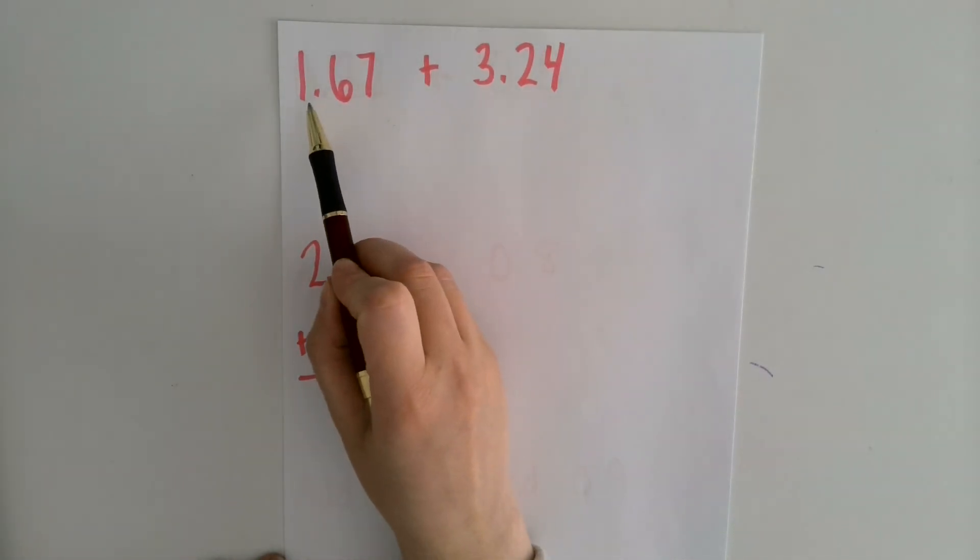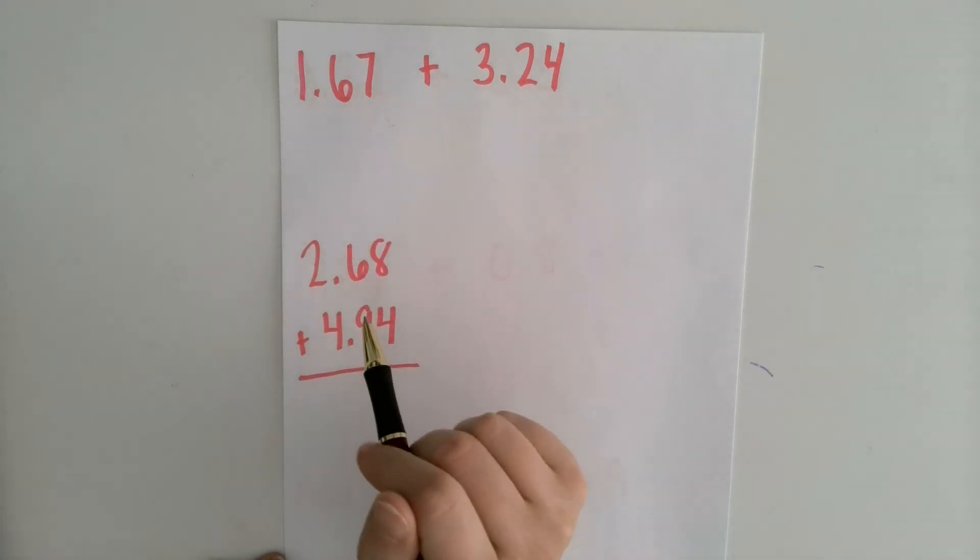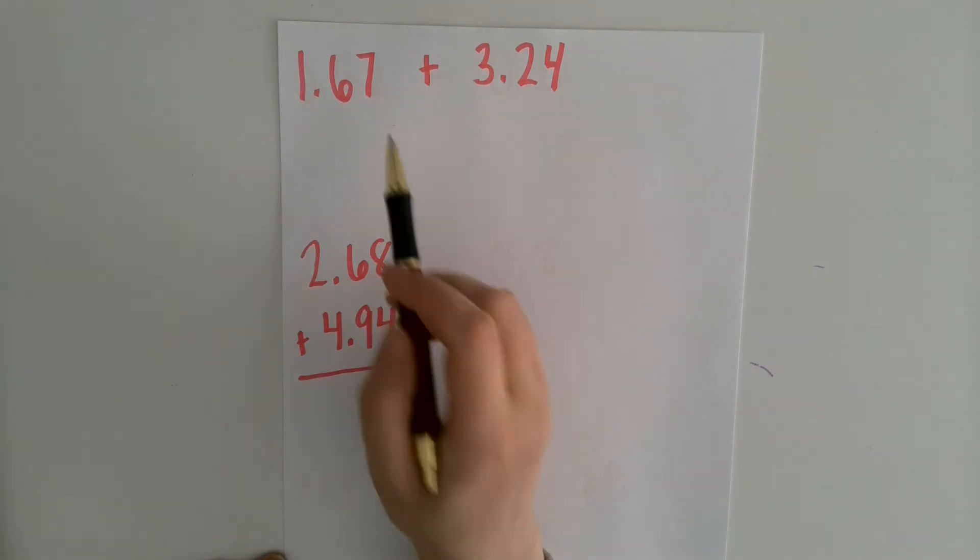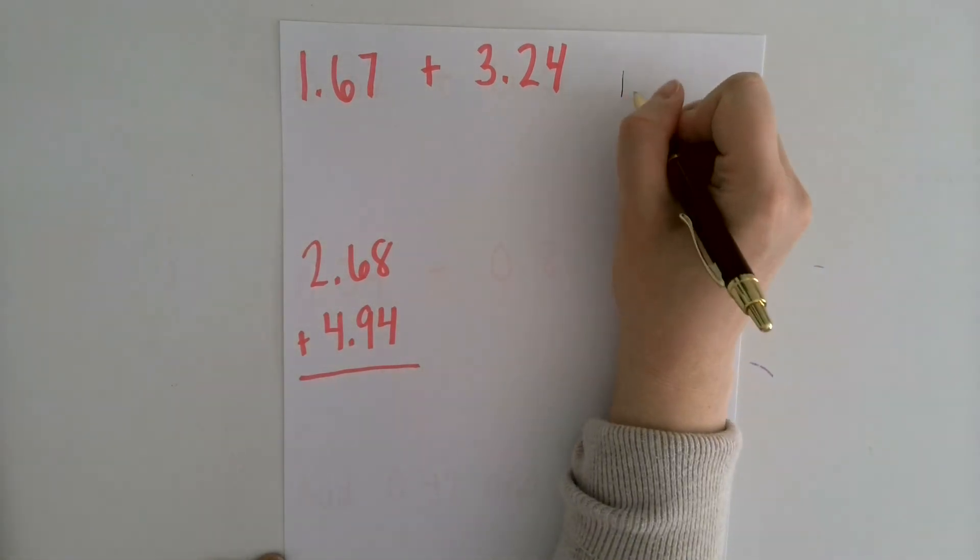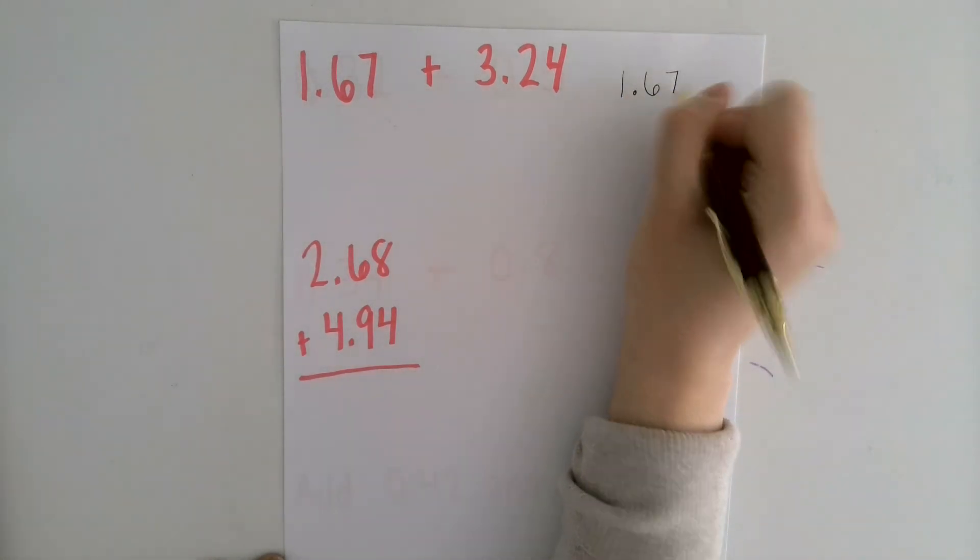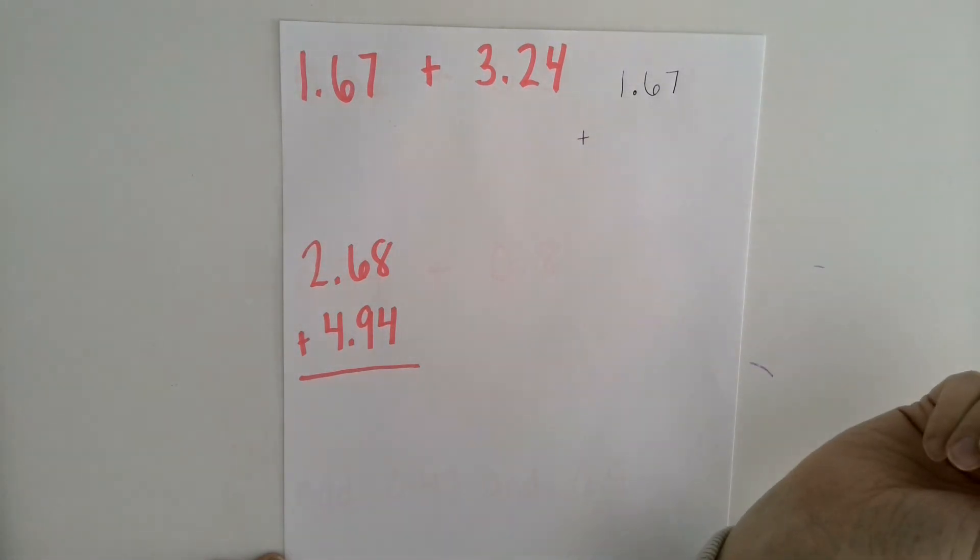So here I have 1.67 plus 3.24. When you're adding two place decimals you want to make sure that you can line the two decimals up perfectly by lining up the decimal point and I'll show you how to do that. So if I have 1.67, I'm going to write that one like that. I'm going to add a plus. Now when I go to write 3.24 I really want to make sure that my decimal points are lined up.